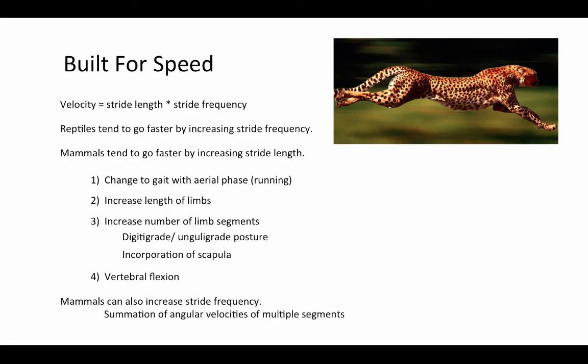We've seen all of these ways that mammals increase their stride length to overcome the limitation of increasing speed by increasing stride frequency. Stride frequency is basically limited by the speed with which muscles contract — the speed the muscle can actually pull a limb forward. But mammals also use some mechanical tricks to increase stride frequency by being able to swing the limbs at a higher rate of speed.